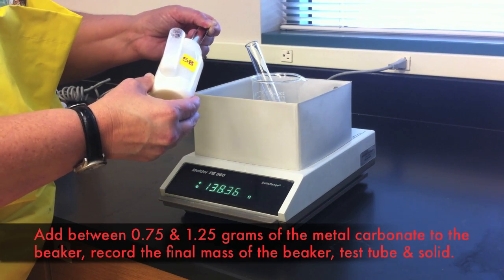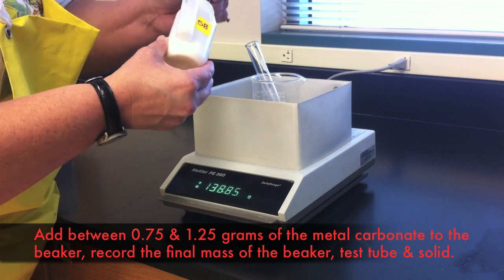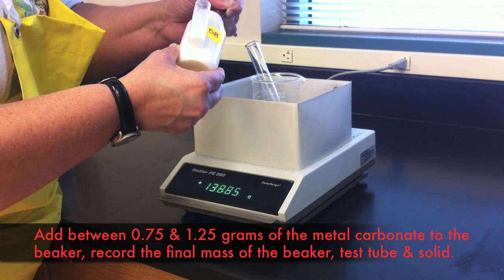You will then take your given carbonate metal and add it to the beaker. You'll want to add about 0.75 to 1.25 grams of the solid.